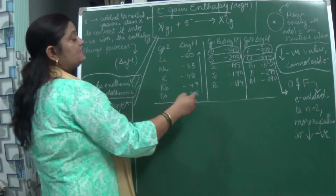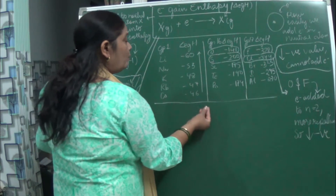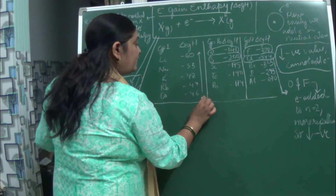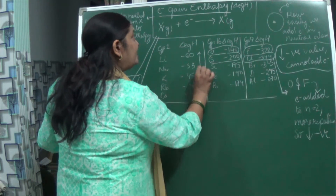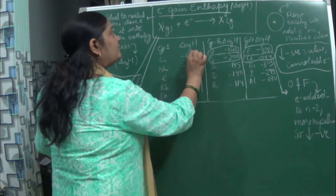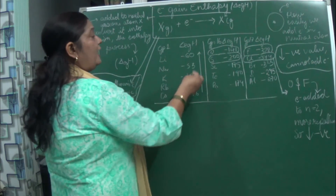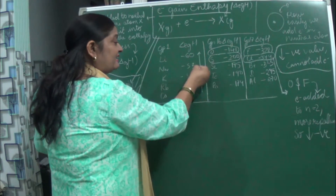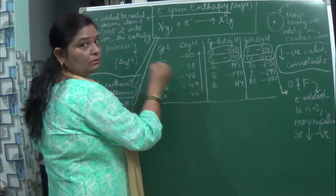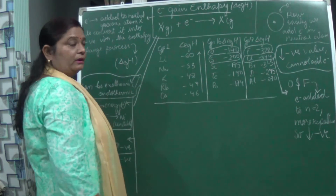So, down the group, the negative value of electron gain enthalpy decreases, while along the period it goes on increasing.